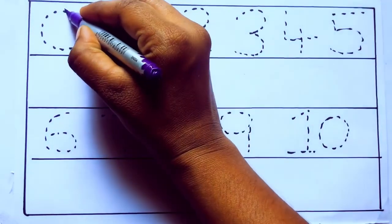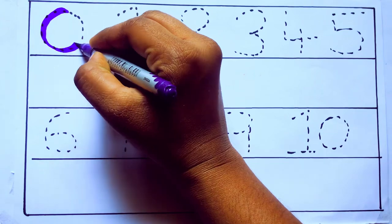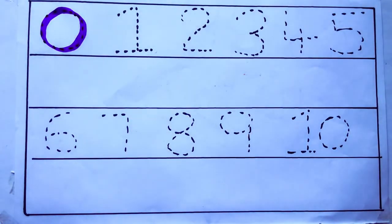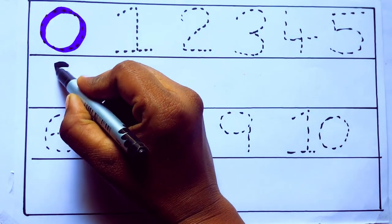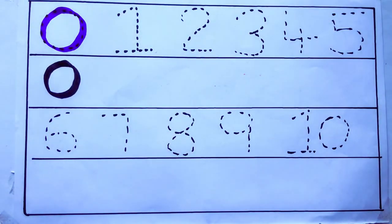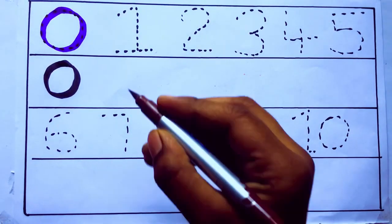Violet color 0. Z, E, R, O. Zero. Brown color.